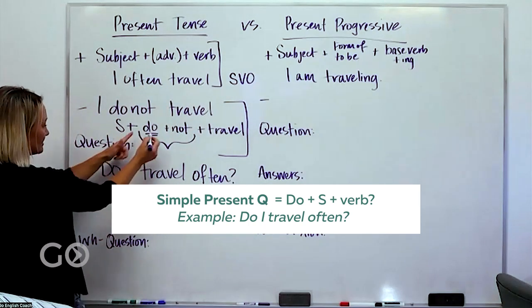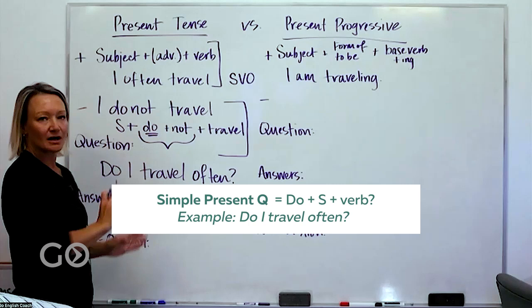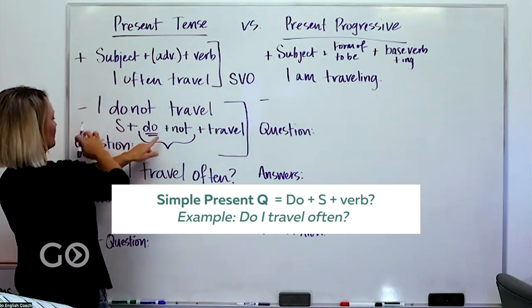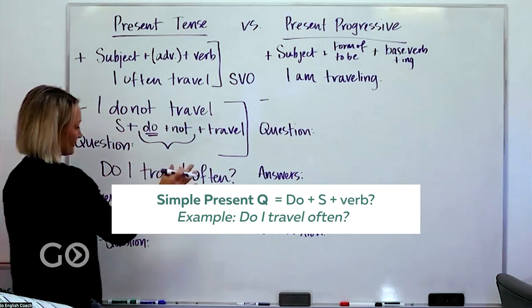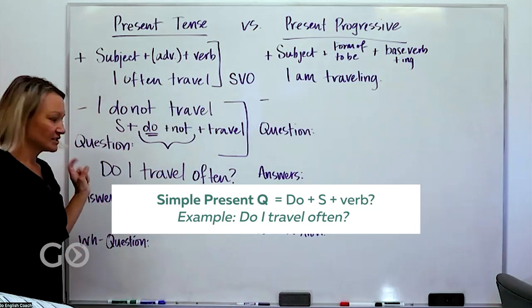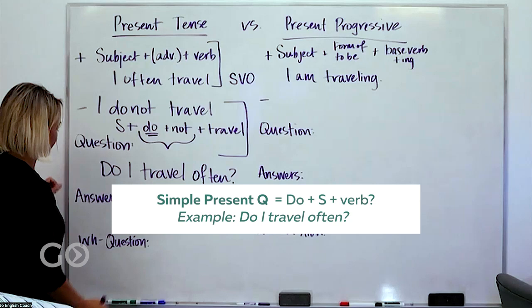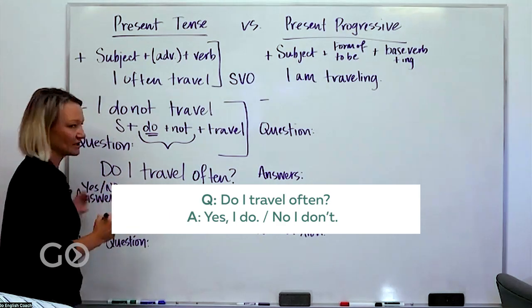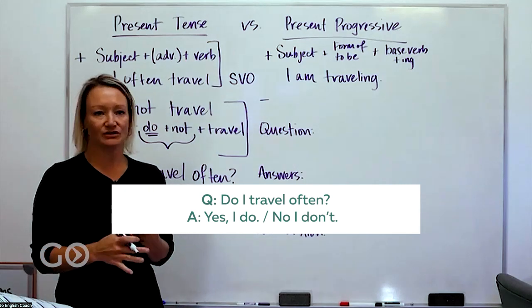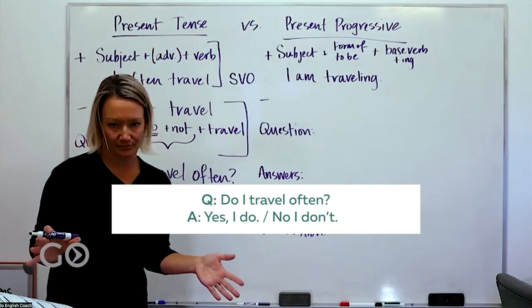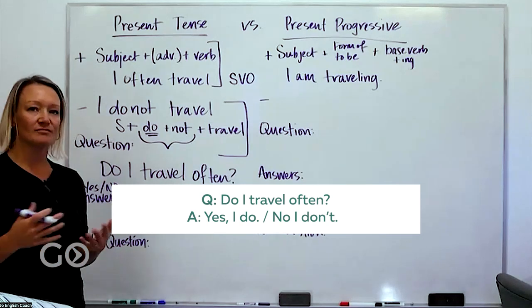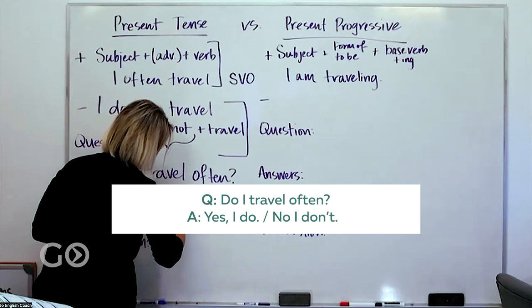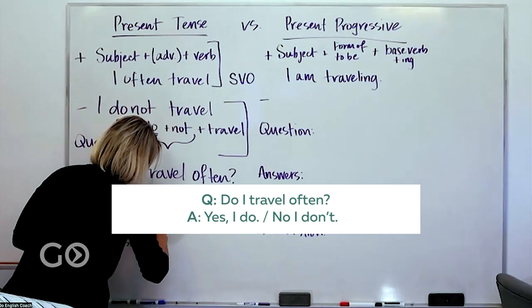So if we change the original sentence to a question, do I travel? It's kind of a strange question because we don't normally ask ourselves a question, but do I travel often? You can use that here at the end. So we've taken this do and we switched positions. Do I travel often? And then the answer to this question, these are called yes no questions. Simply you can answer yes or no and you don't need any other parts. If you want the more complete answer you would say yes I do or no I don't.